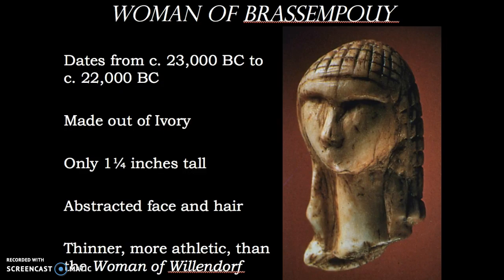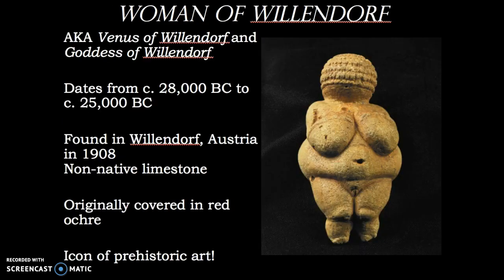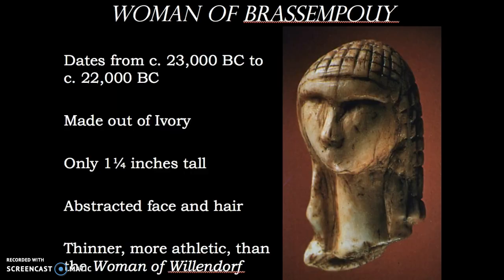Another really cool work is the Woman of Brassempouy, which is only about an inch and a quarter tall. She's made out of ivory and has an abstracted face and hair. She's thinner, definitely more athletic looking than the Woman of Willendorf. A lot of people have said that the Woman of Willendorf could possibly be a fertility goddess, and that is up for debate. It is interesting that unlike the other sculptures we find from this time, she doesn't really have a defined face such as the Lion-Human or the Woman of Brassempouy.